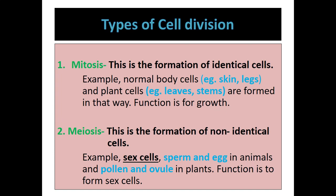Meiosis, on the other hand, is the formation of non-identical cells — the new cells formed are different from the parent cell. In human beings, the chromosome number is 46, but when new cells are formed through meiosis, they will be haploid, meaning they will have 23 chromosomes. This type of cell division takes place in the sex cells of plants and animals — sperm and egg in animals, and pollen and ovule in plants.